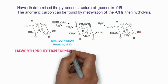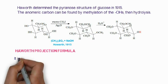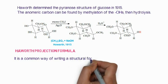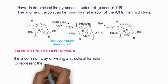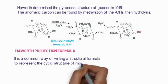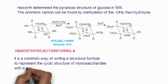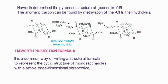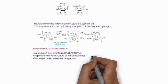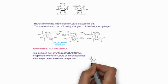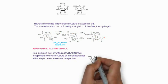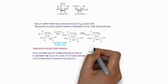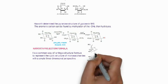The Haworth projection formula is the representation of the ring structure. It is the common way of writing the cyclic structure of monosaccharides. This structure is usually three-dimensional, as you can see here. The numbering usually starts from the carbonyl carbon atom — in aldoses it is carbon number one, while in fructose it is carbon number two.